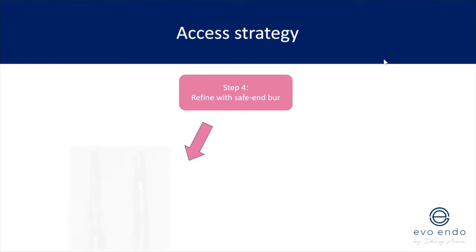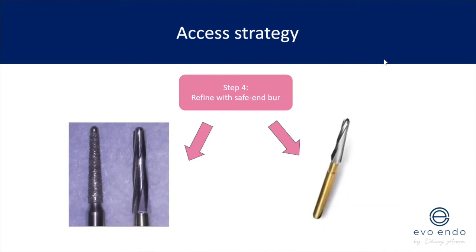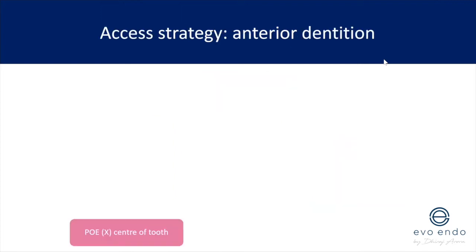How do you refine your prep? Endo-Z burs or any safe-ended, non-end-cutting burs are great. The Endo-Z bur comes in 9 and 11 millimeter shanks — I'd always get the 11 millimeter shank because the longer it is the more you can see. Know where you're aiming and what you're looking for.